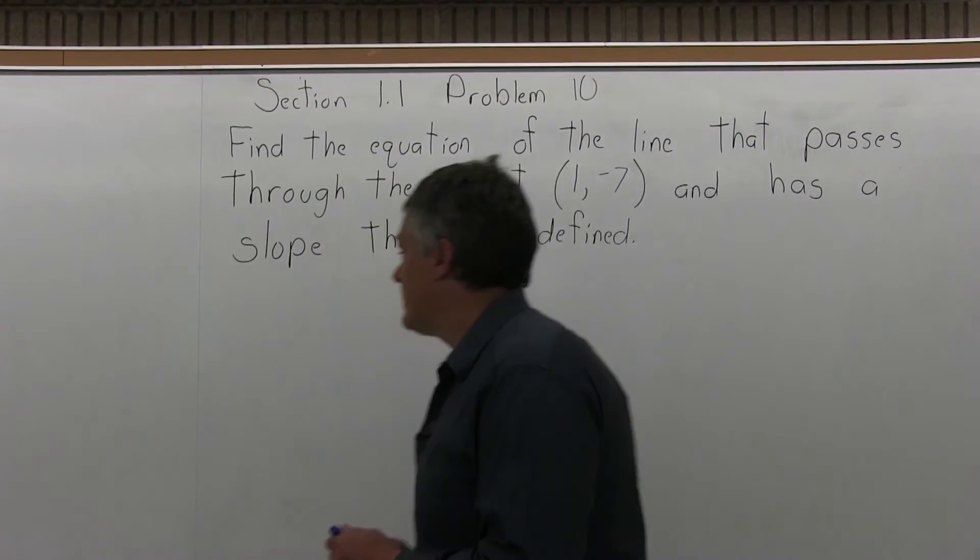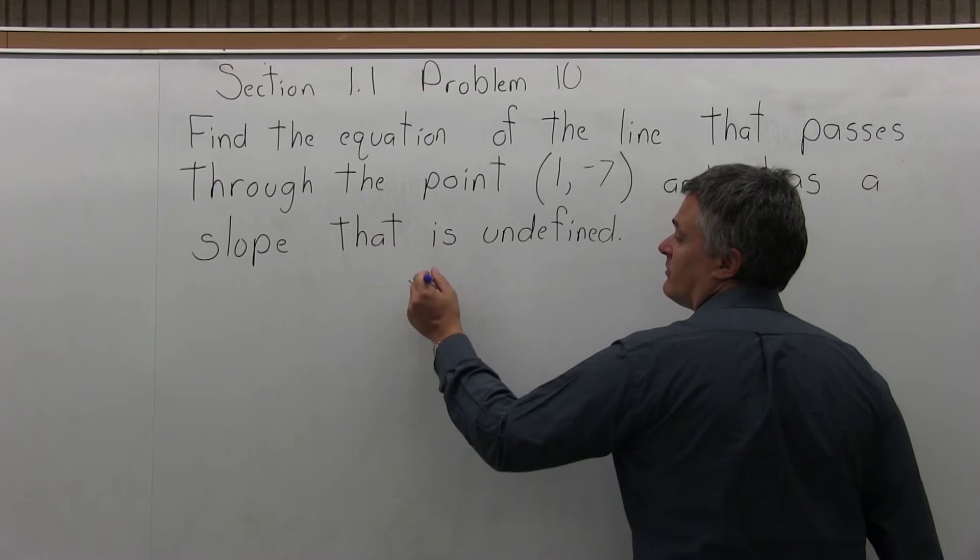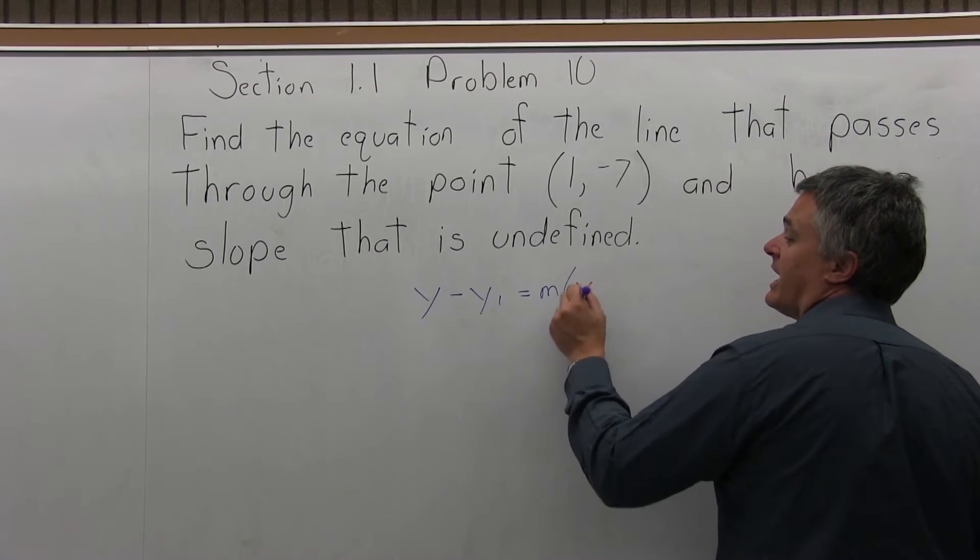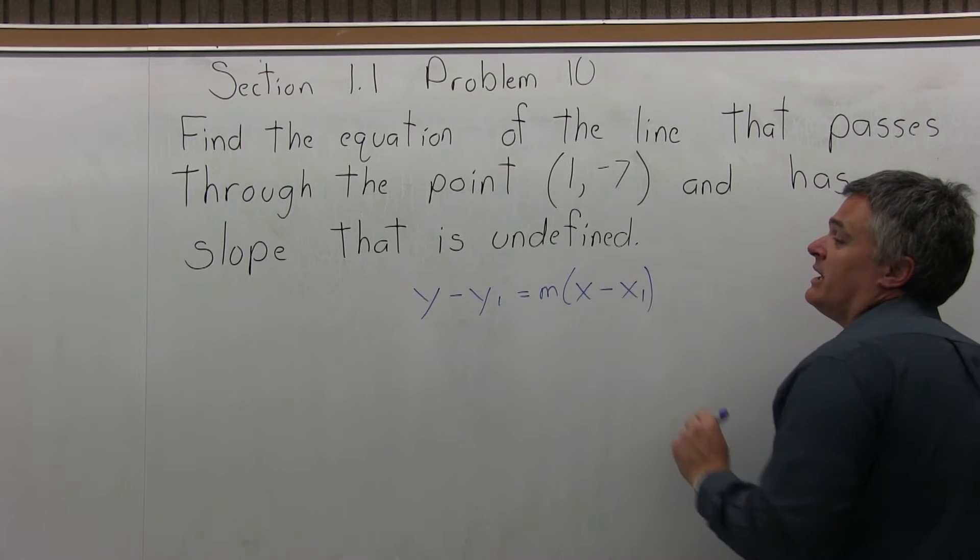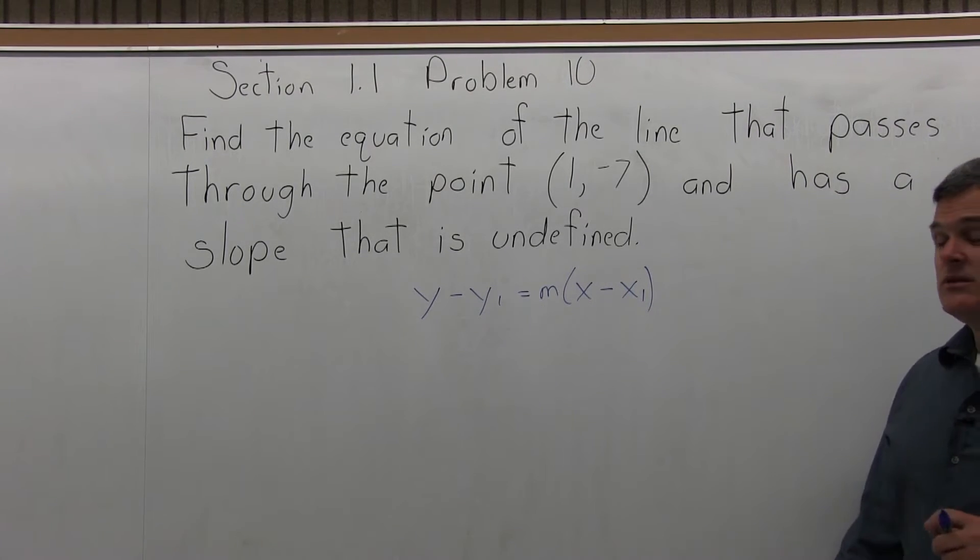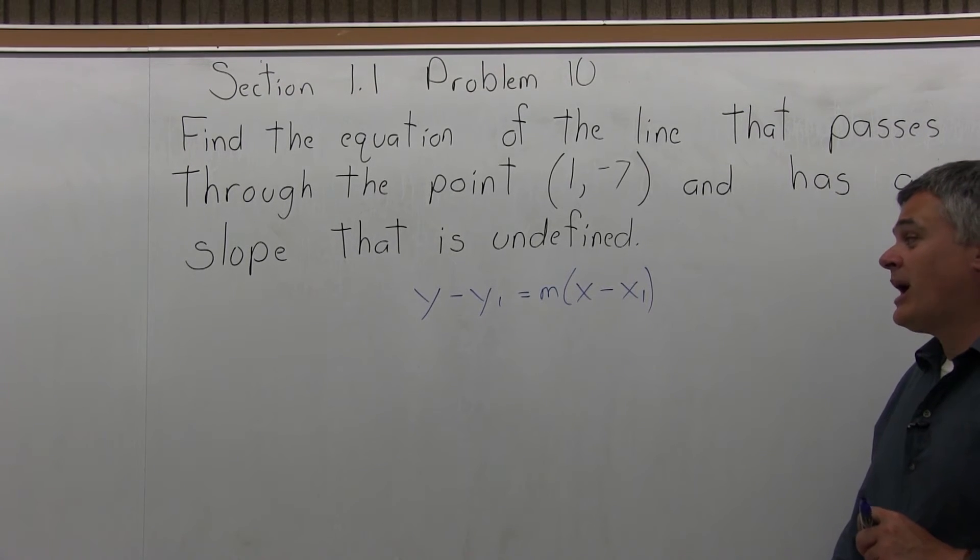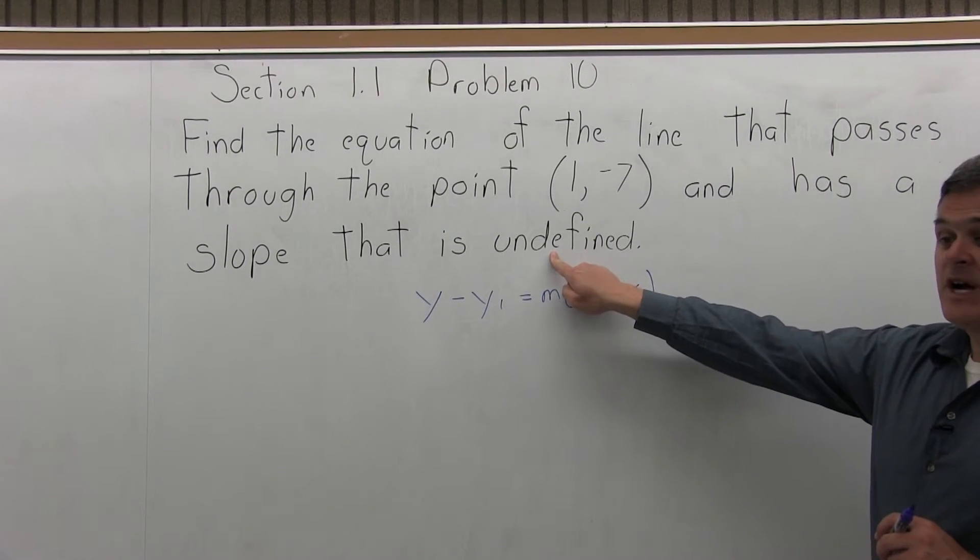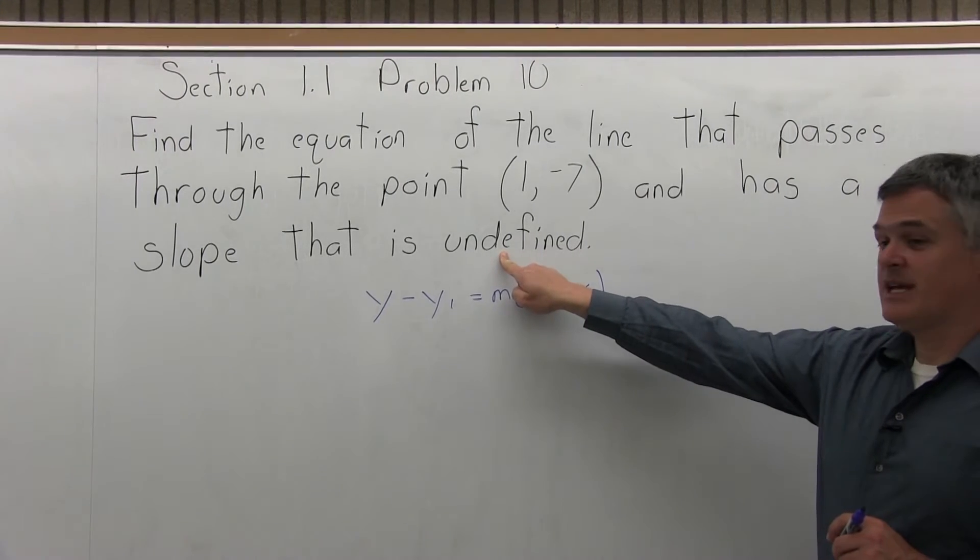So ordinarily, when we find the equation of a line, we start with a formula: y - y₁ = m(x - x₁). And ordinarily, this works really well. But it doesn't work for this problem. The fact that the slope is undefined makes this a little bit of a special case.